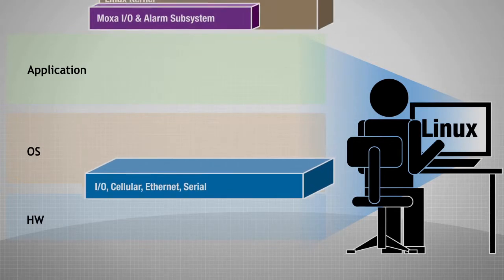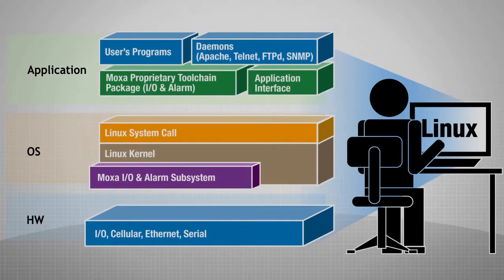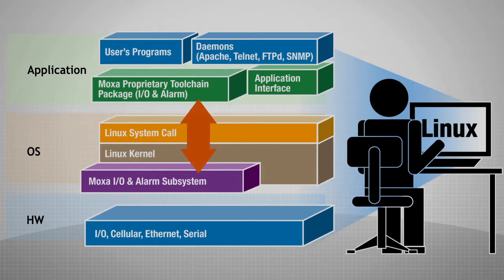Normally, APIs monitor the IO status from the application level, but at MOSAR, we build our APIs to monitor the IO activity at the IO and alarming subsystems, which run at the OS level. Therefore, our IO access and alarming APIs are significantly faster than other programmable platforms.